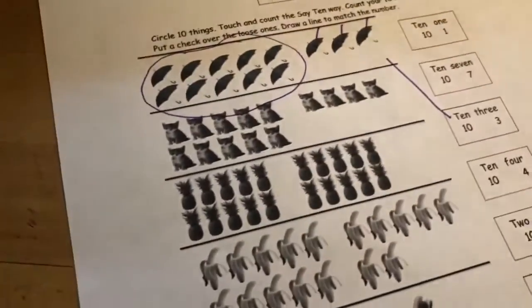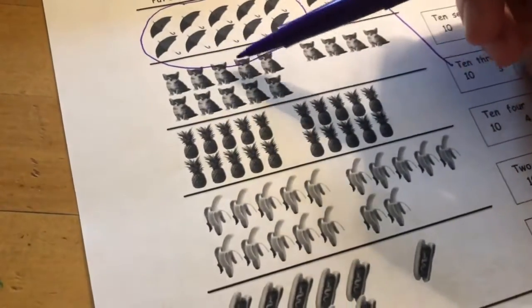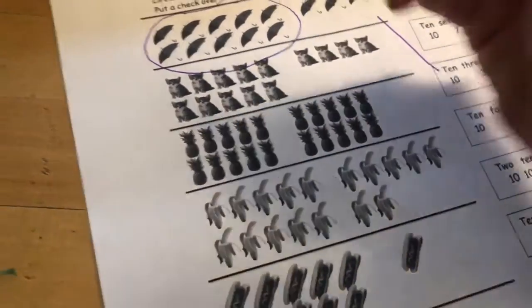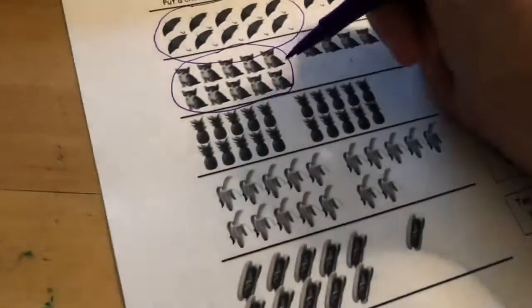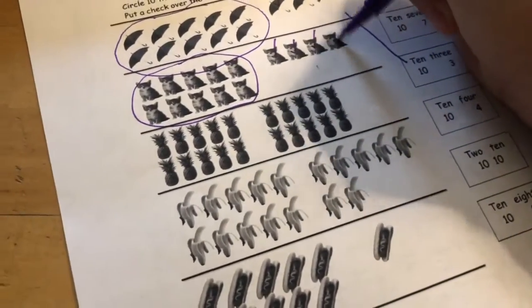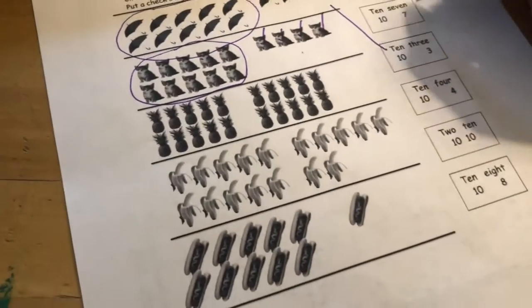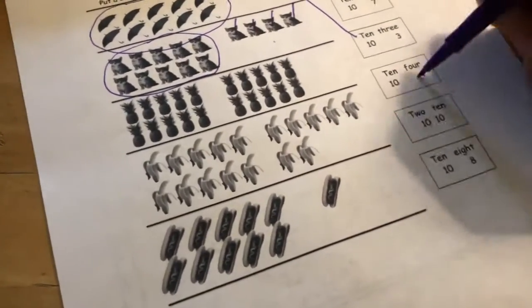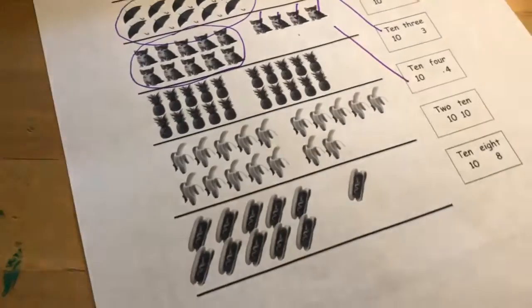Now we can count our cats. We have 1, 2, 3, 4, 5, and because it's two rows of 5, I know I have a group of 10 here. And I can say 10, 10-1, 10-2, 10-3, 10-4. So I'd look and see, okay, which one of these says 10-4? I see 10-4 right here, so I'll draw a line to match.